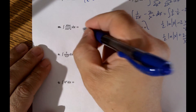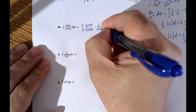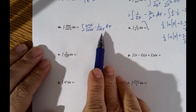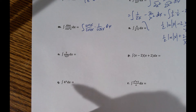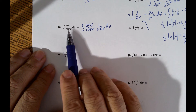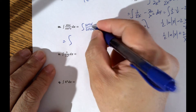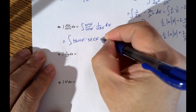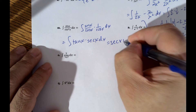Rewrite sine x over cosine squared x as sine x over cosine x times 1 over cosine x. What I saw was that it almost looks like tangent except cosine has an exponent while sine doesn't, so I split it to get tangent out of it. That's tangent x times 1 over cosine x, which is secant x. Tangent times secant is the derivative of secant, so the integral is secant x plus a constant.